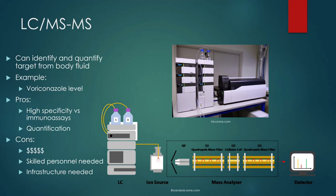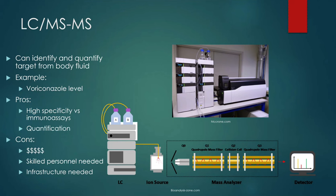After chromatographic separation, you collect the fraction corresponding to your target — for example, where voriconazole is expected to elute — and then ionize it by converting it to a fine spray with an electric charge applied. The number of ions attached depends on the molecule's chemical properties. This ionized sample is then passed through the mass analyzer — the mass spectrometer — which separates and identifies molecules by their mass-to-charge ratio, allowing precise quantification of the drug level.